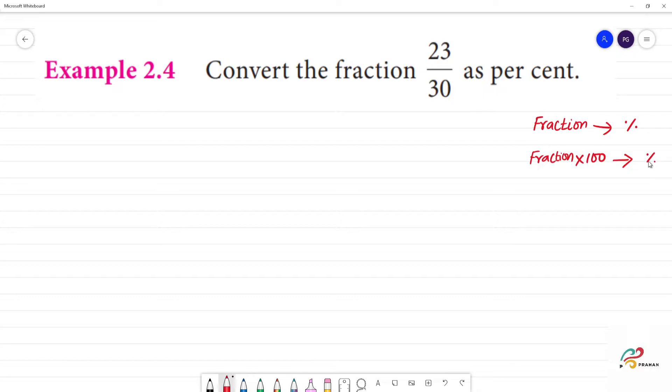Clear? So, fraction to percentage convert, we do the fraction multiplied by 100. So, the fraction we need is 23 by 30. We need to convert, we do the fraction multiplied by 100.